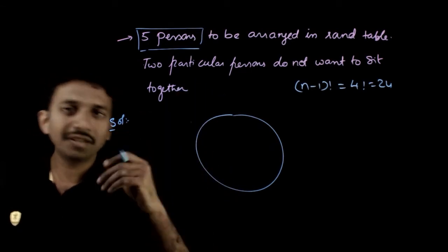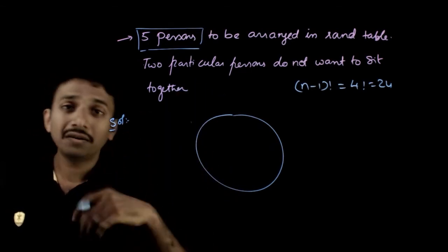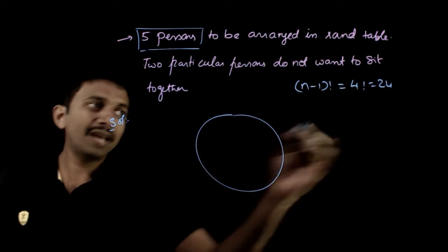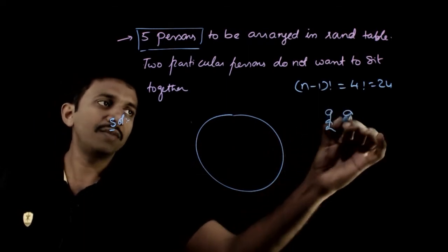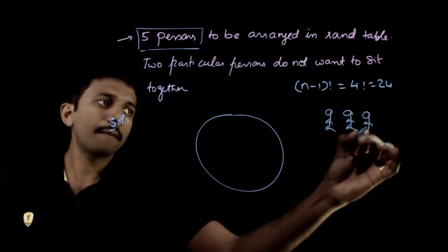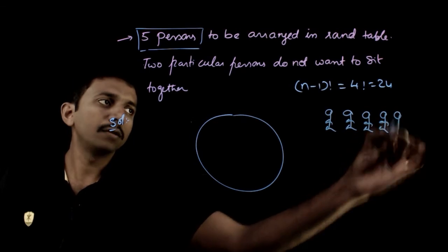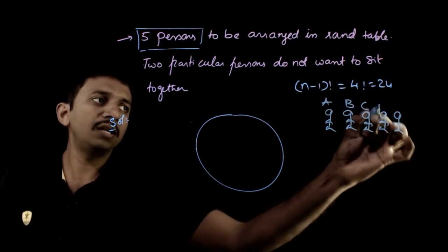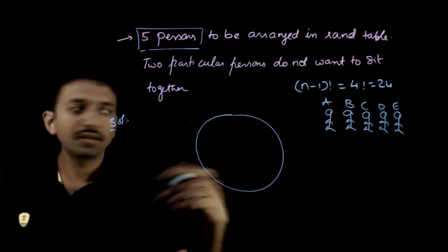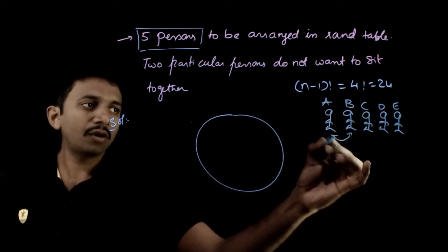But now the condition is two particular persons do not want to sit together. So let's give some names to them. You have persons A, B, C, D, E - five persons. Let's say A and B do not want to sit together.